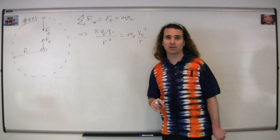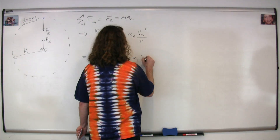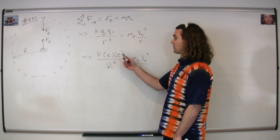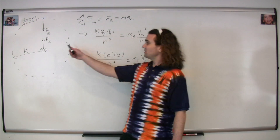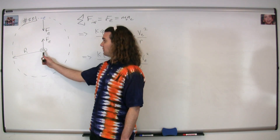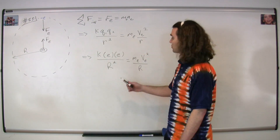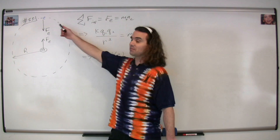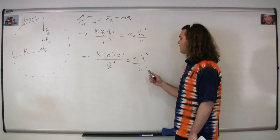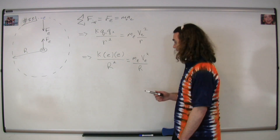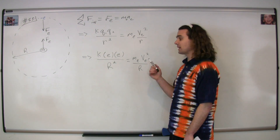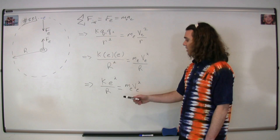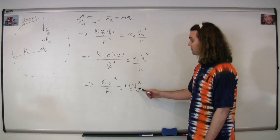Now we can substitute in our variables. The charge for both the electron and the proton has a magnitude of the fundamental charge e, divided by r — which in this case is the radius of the circle, so we get capital R squared. That equals the mass of the electron times the velocity of the electron squared, divided by the radius capital R. We can cancel one capital R from both sides, giving us Coulomb's constant times the fundamental charge squared, divided by the radius of the circle, equal to the mass of the electron times the velocity of the electron squared.